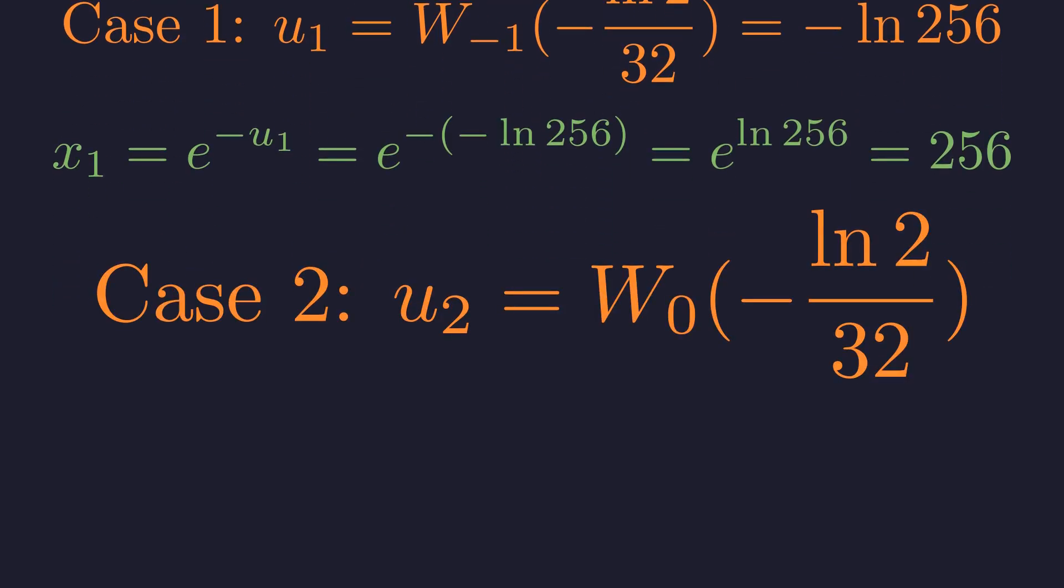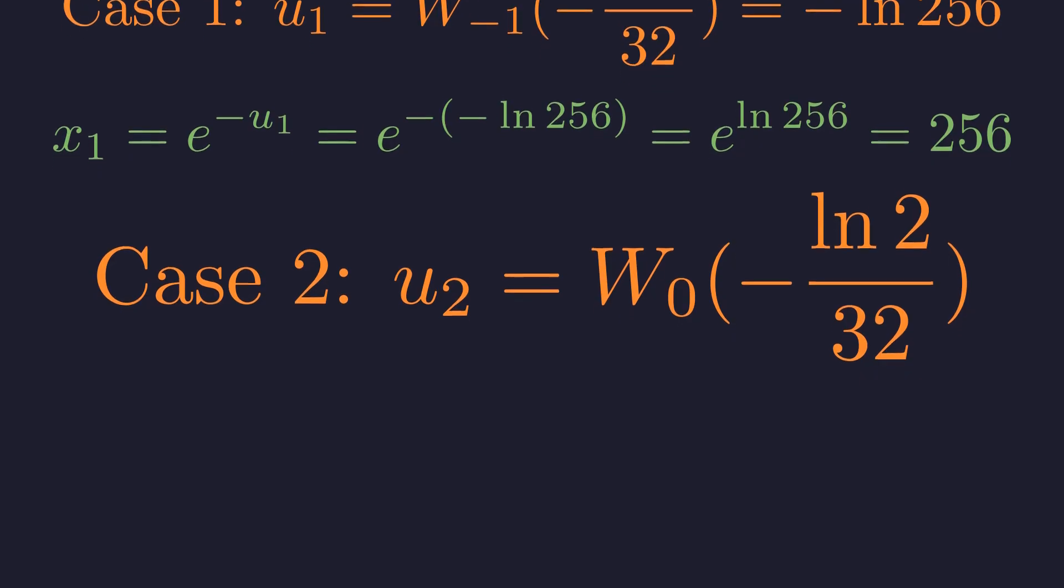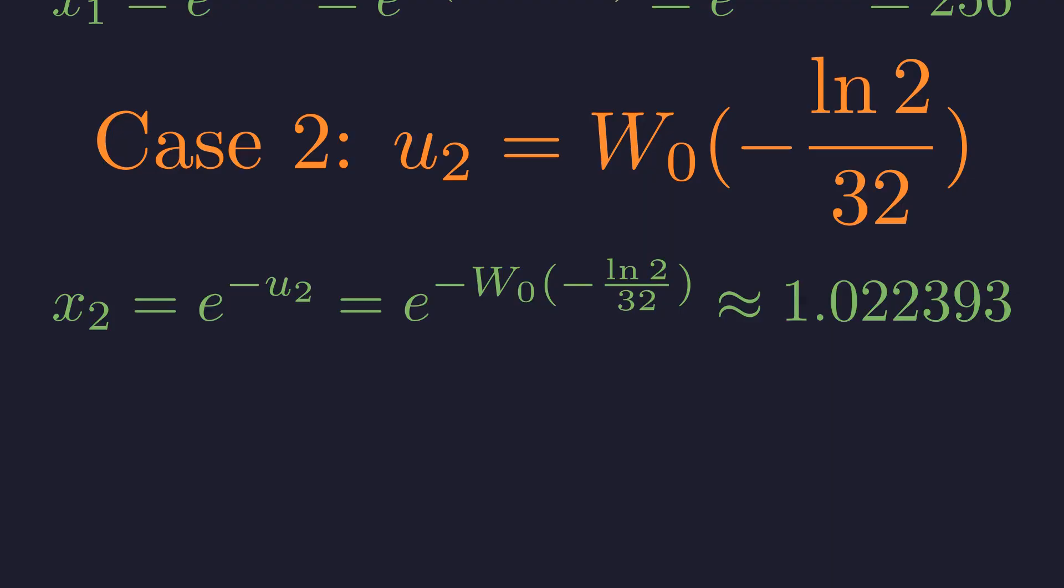The second solution comes from the principal branch w naught. This value is transcendental and cannot be simplified further. Plugging this into our substitution for x gives the exact form of the second solution. Numerically, this evaluates to approximately 1.022.